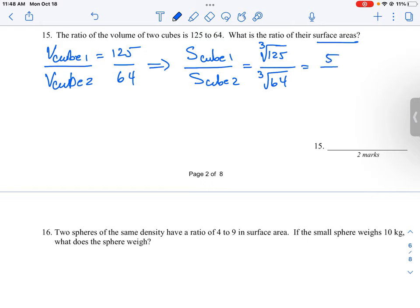and then cube root of 64 is 4. So the ratio of the sides of the cubes go from 125 over 64, that's the volume, down to 5 over 4, which is the sides.